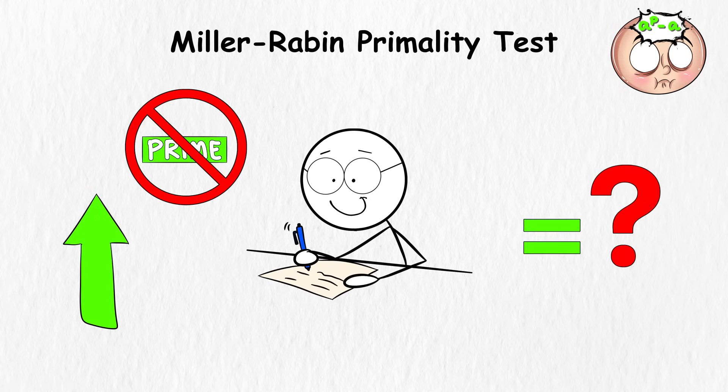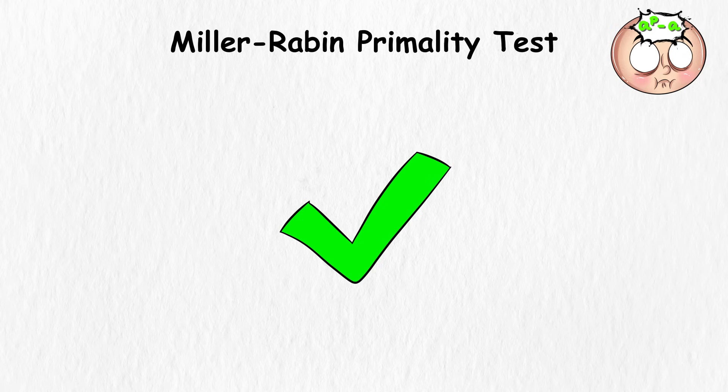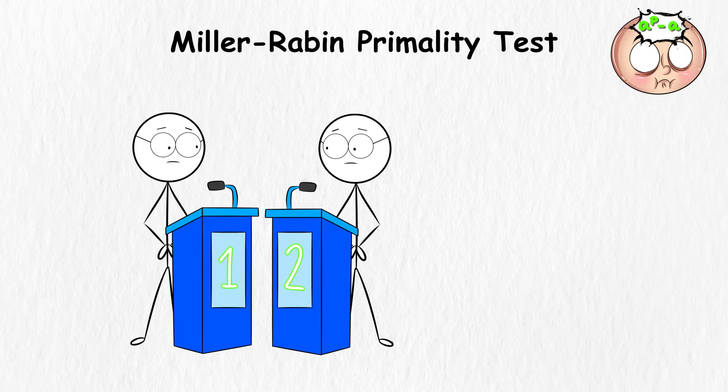The reason why it's unsolved in a perfect sense is because there's no way to be 100% sure using this test alone. It's like having a really good guessing game that can be right most of the time, but still has a tiny chance of being wrong.